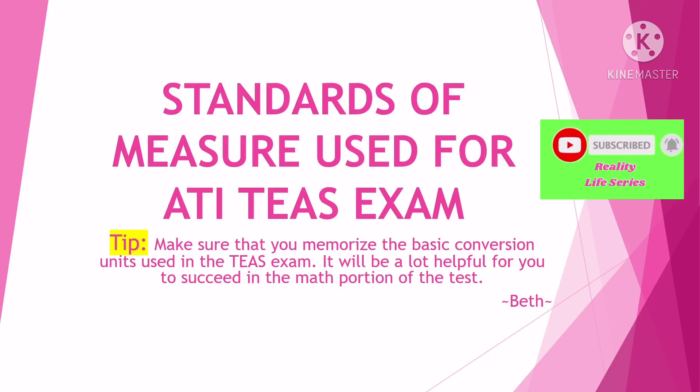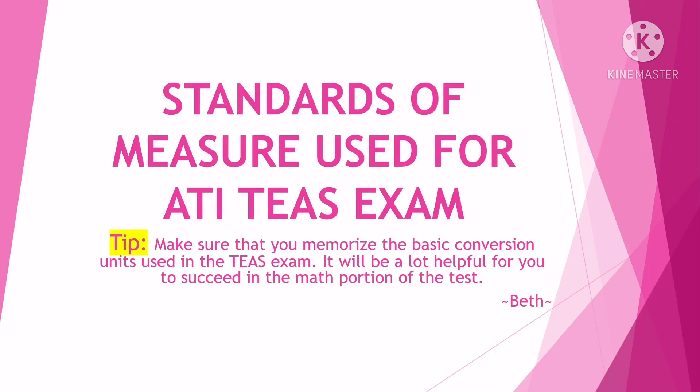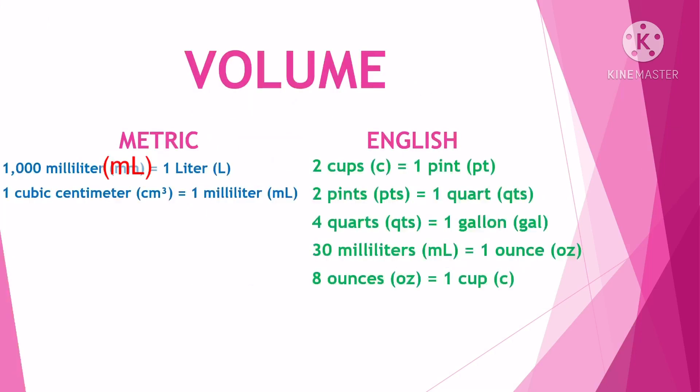For the metric system: one milliliter is equal to one liter, and one cubic centimeter is equal to one milliliter. For English measurements: two cups is equal to one pint.